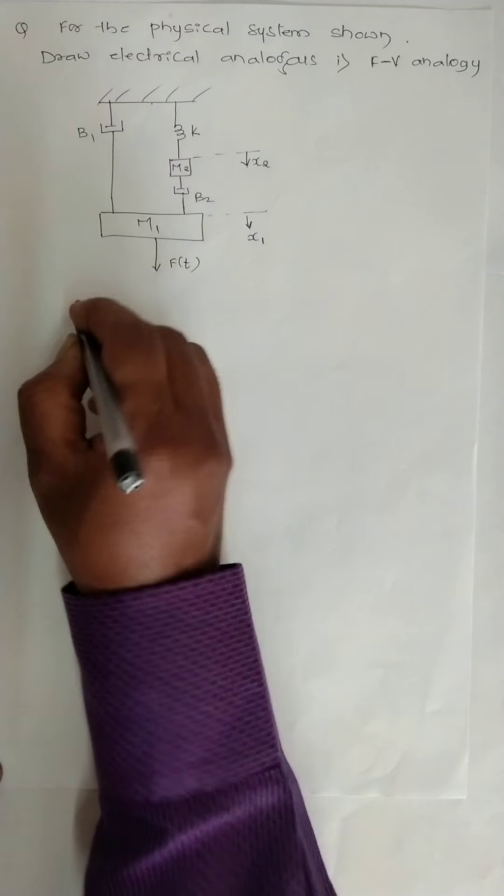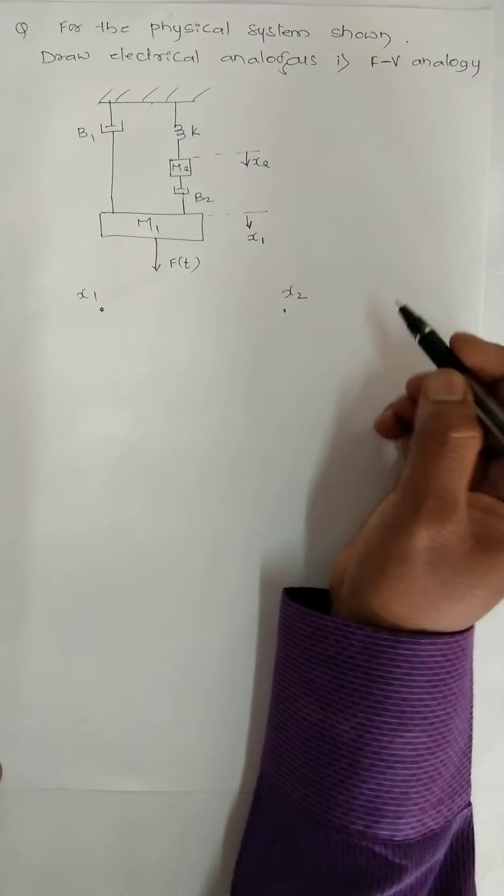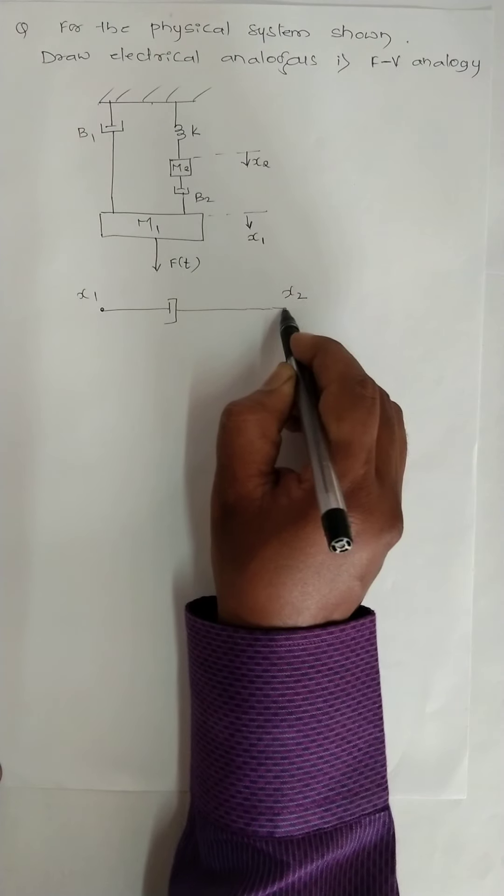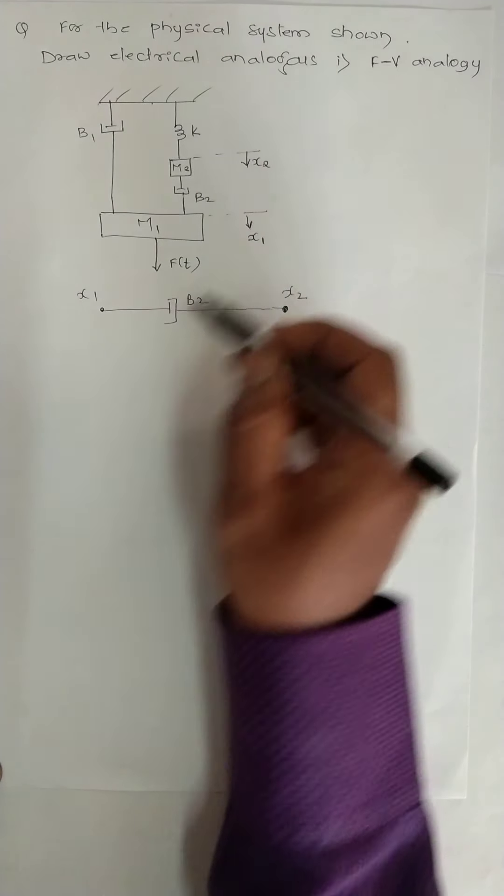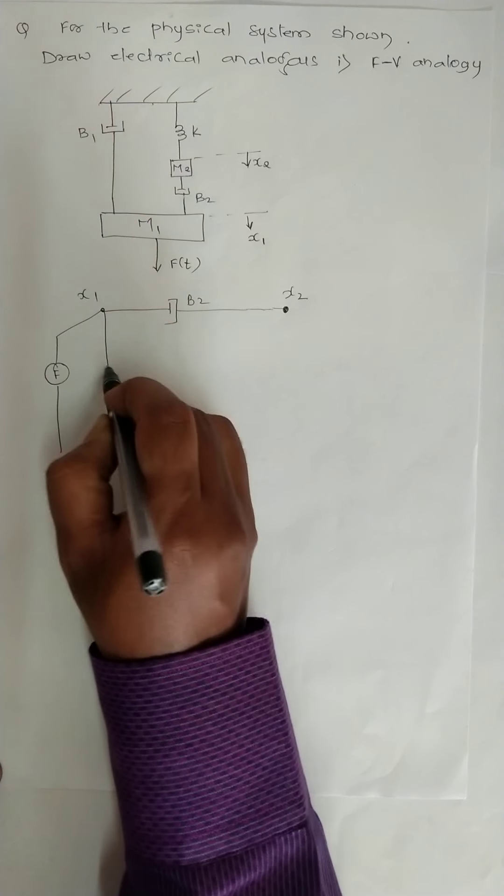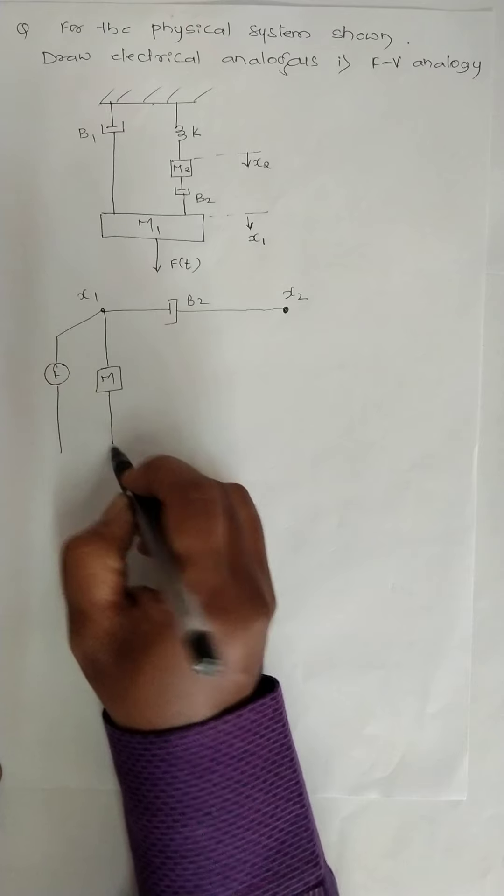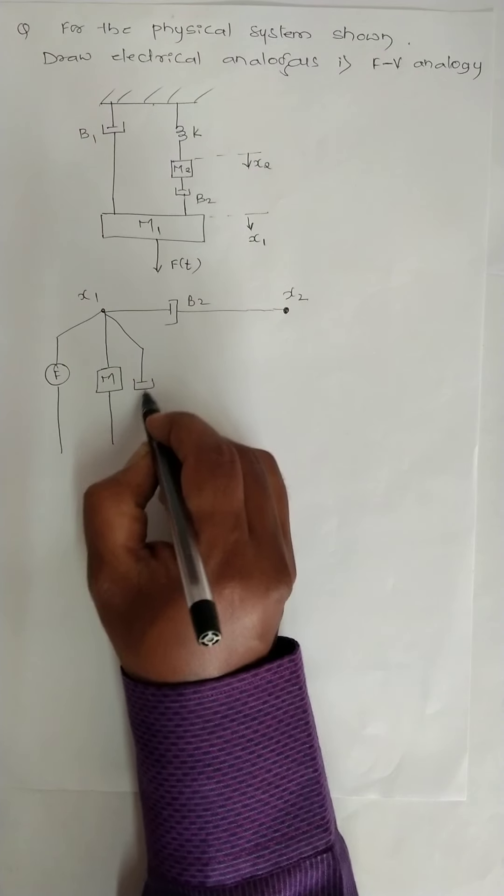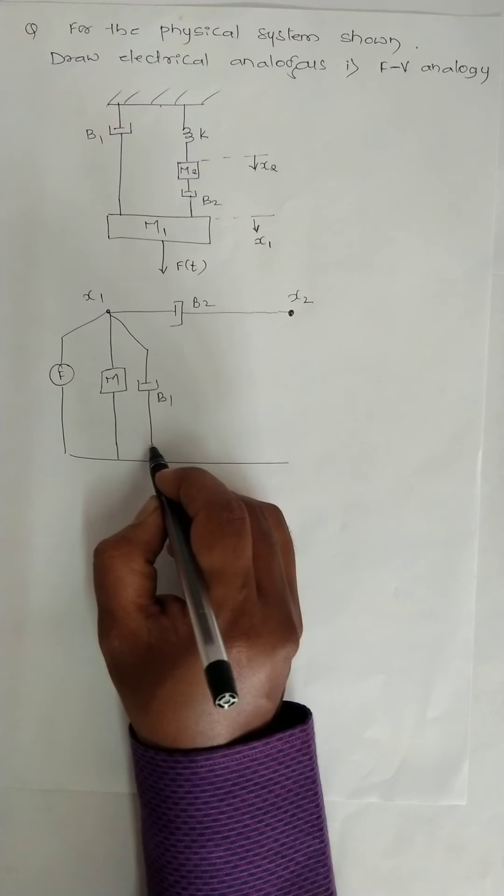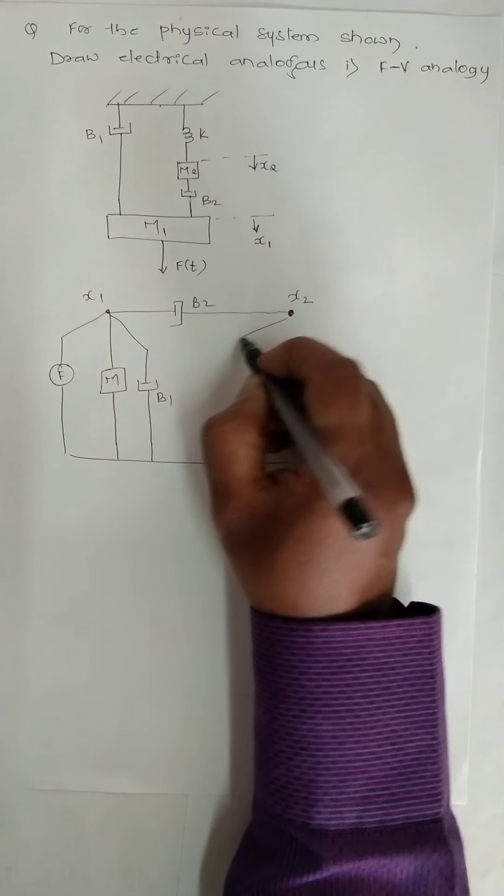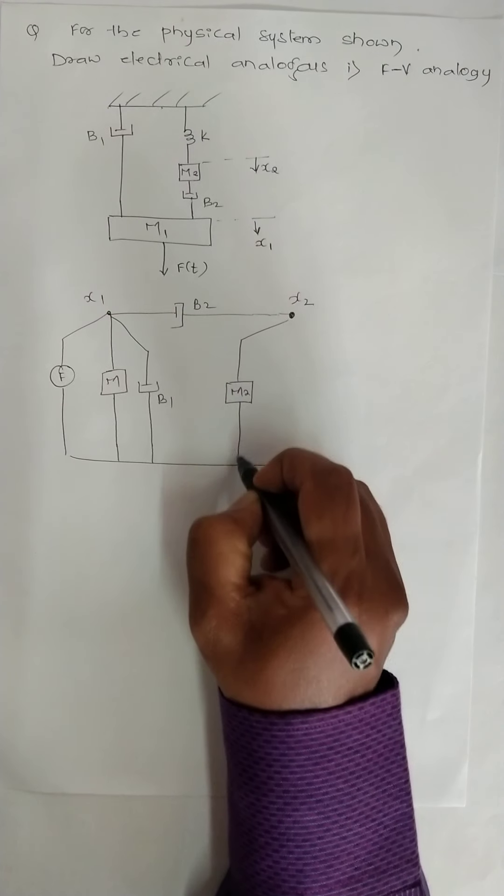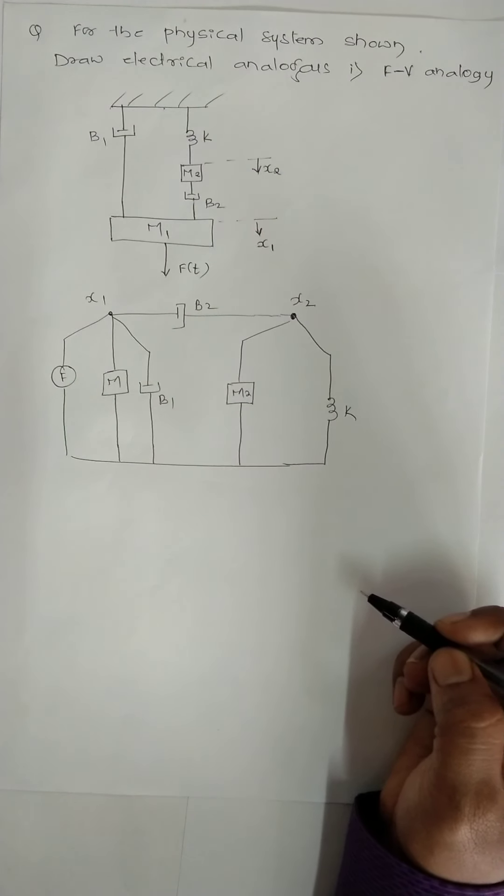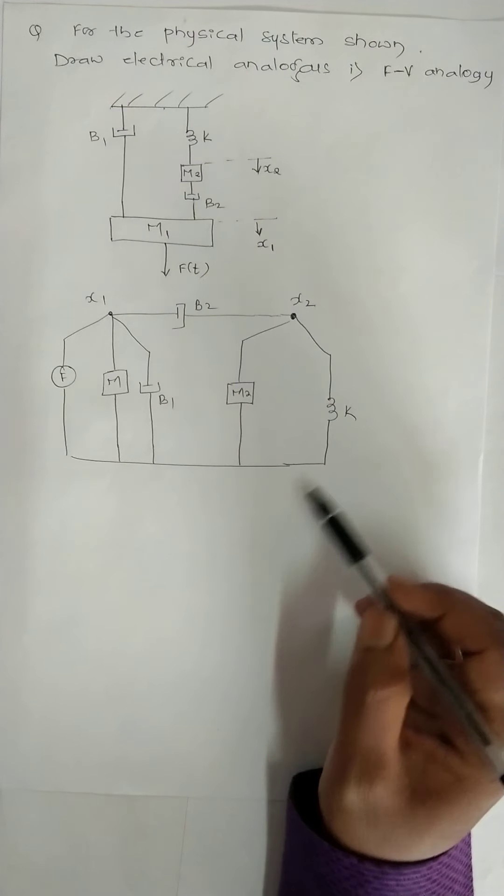Then we will draw the equivalent circuit x1, x2. In between x1 and x2 we are having B2. To x1 we are having force, we are having mass M1, then another term B1. Similarly, to x2 we are having M2 then K. So this is the equivalent circuit.